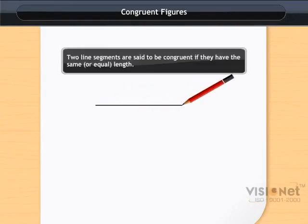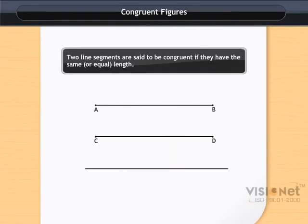Two line segments are said to be congruent if they have the same or equal length. Here, the line segment CD completely covers the line segment AB. So, we say that the line segment AB is congruent to the line segment CD.